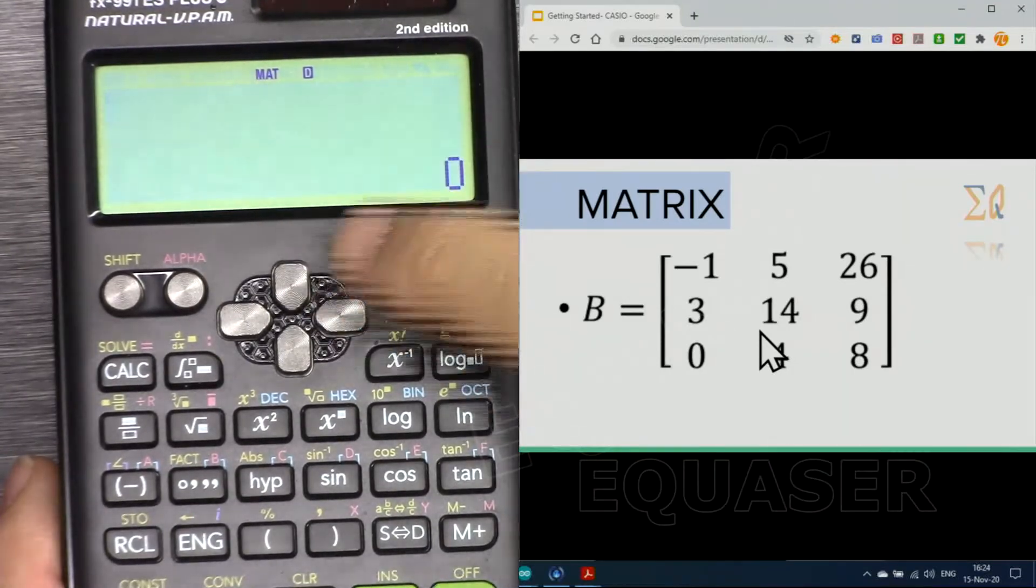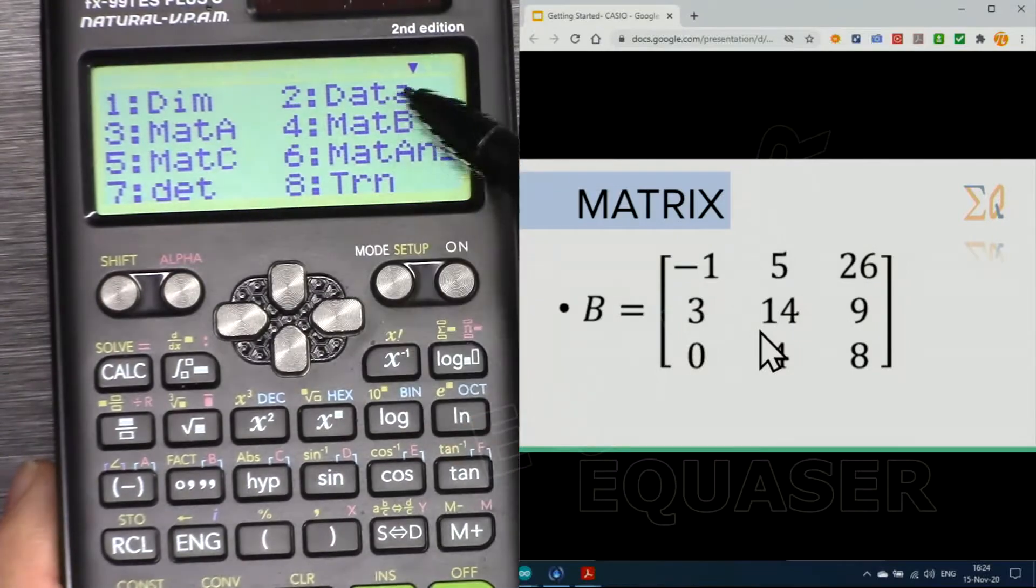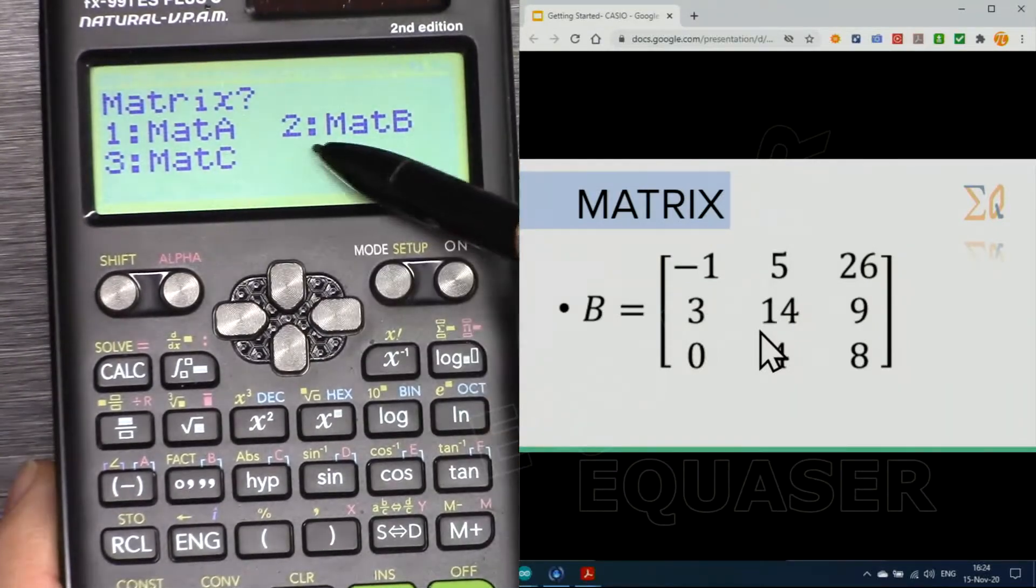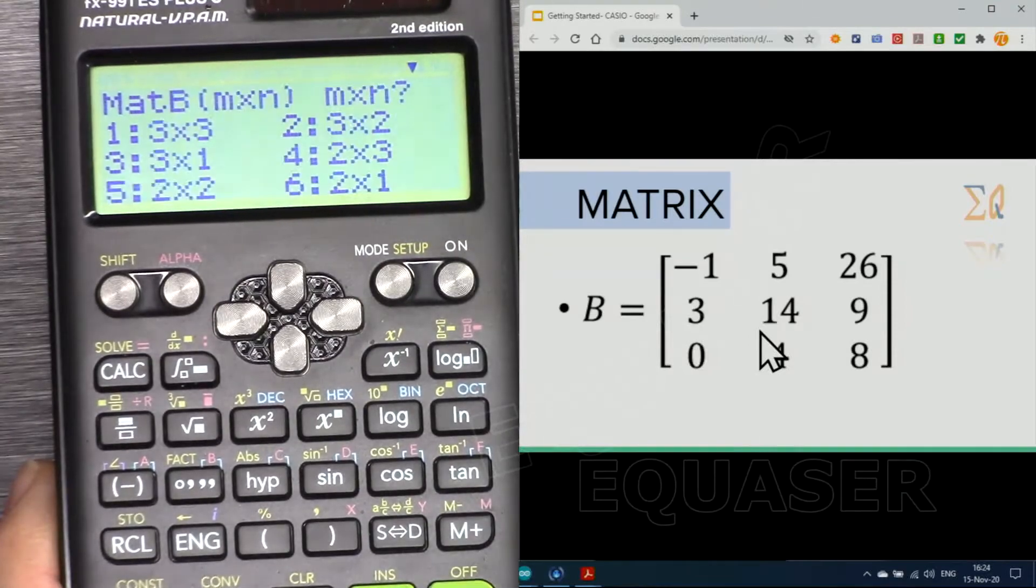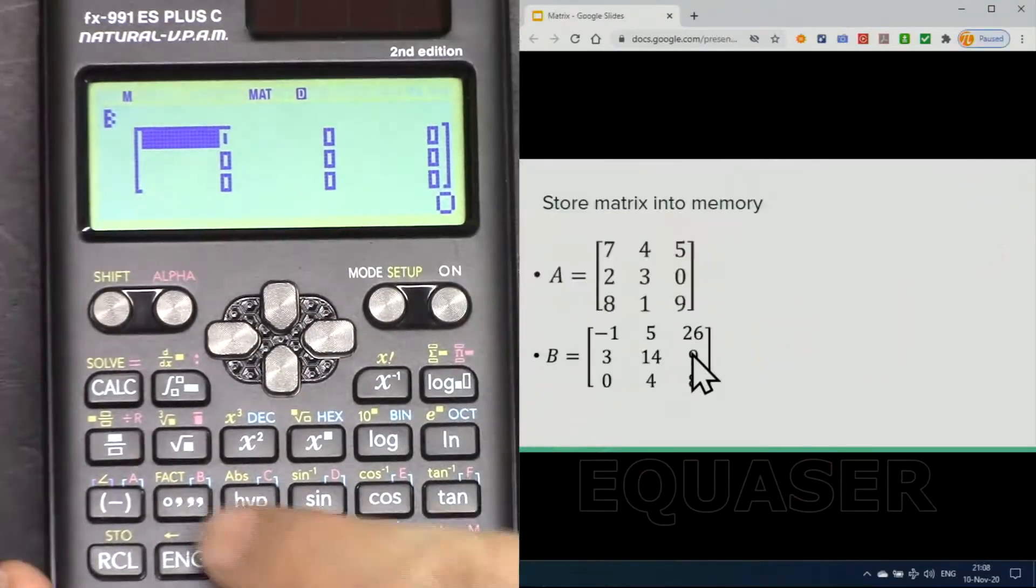Again shift 4 matrix so we can go to the dimension 1, and then which matrix: matrix B, press 2, and dimension is 3 by 3. I'm pressing 1.